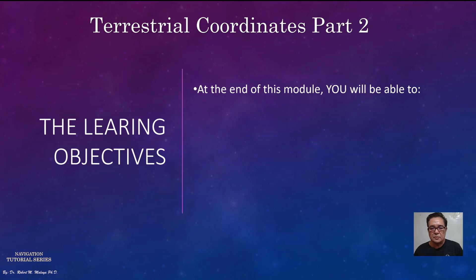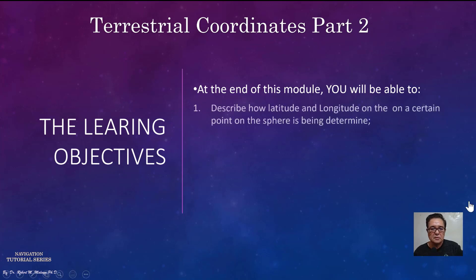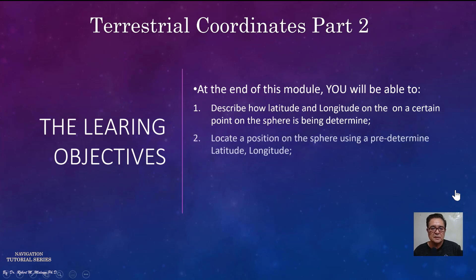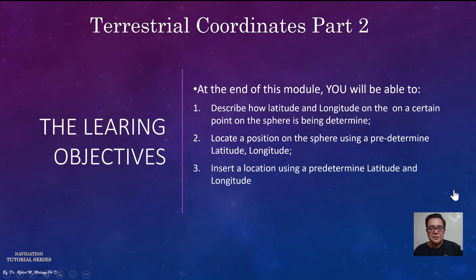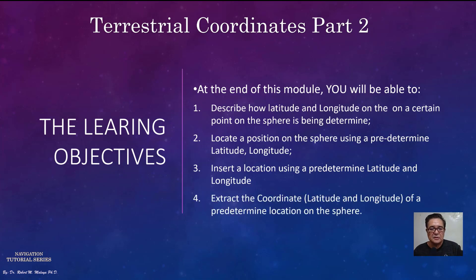Terrestrial Coordinates Part 2. At the end of this module, you will be able to describe how latitude and longitude on a certain point on the sphere is being determined. You can locate a position on the sphere using a predetermined latitude and longitude, insert a location using a predetermined latitude and longitude, and extract a coordinate of a predetermined location on the sphere.